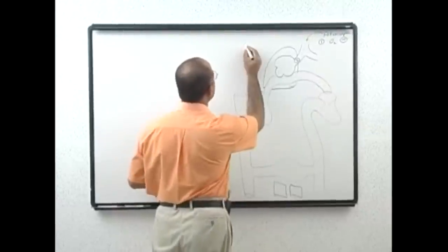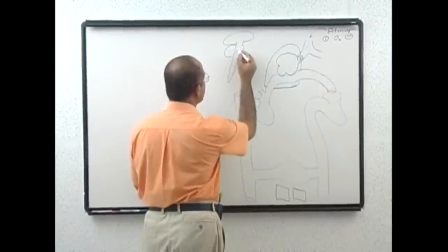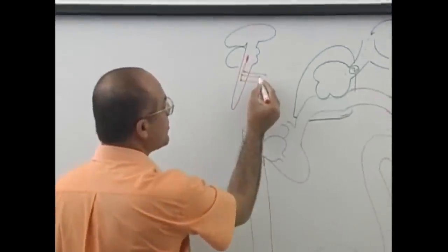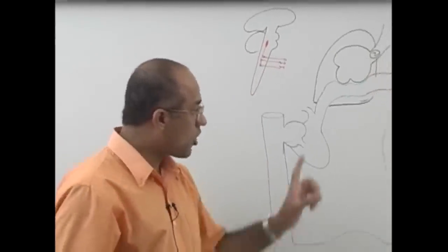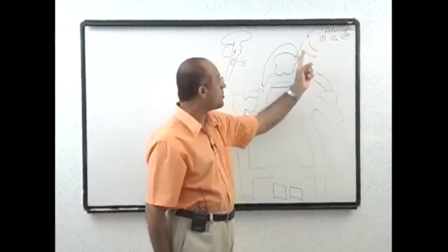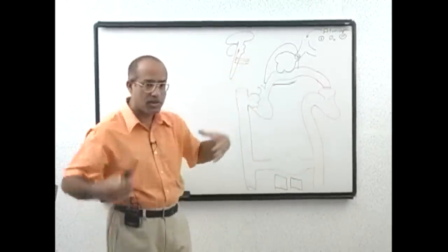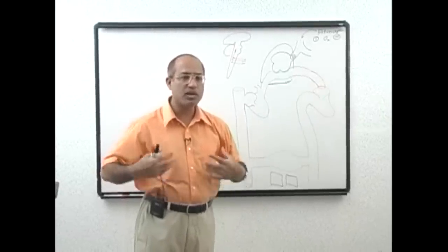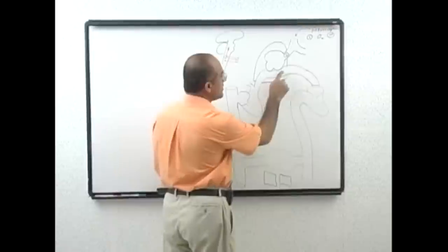The respiratory pump consists of the thoracic cage, intercostal muscles, and diaphragm. Their coordinated effort produces inspiration and expiration. The inspiratory center is located in the medulla, and lower motor neurons supply the intercostal muscles and diaphragm. This respiratory pump must be functioning normally.